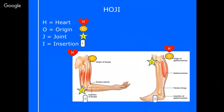The O in HOJI is for Origin. The origin is the point closest to the heart — where the muscle starts. It should be before the joint that the muscle crosses. For example, the origin of the bicep is right at the very top of the shoulder joint, and then the joint it crosses is down at the elbow — that's the J. The I is the Insertion point, which is where the muscle attaches furthest from the heart.